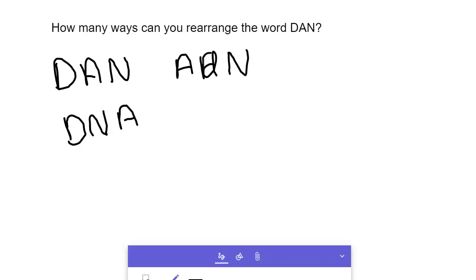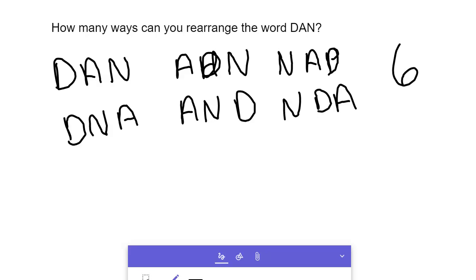And that should be an uppercase because I'm using uppercase. Or A, N, D. Or we could put the N in the front. So now the N's in the front. And so N, A, D. That should be a D. Or N, D, A. And that exhausts our list. So that's all six of them. And that would just be solving it brute force. If we can just list them all out, there they are. We know there's six.